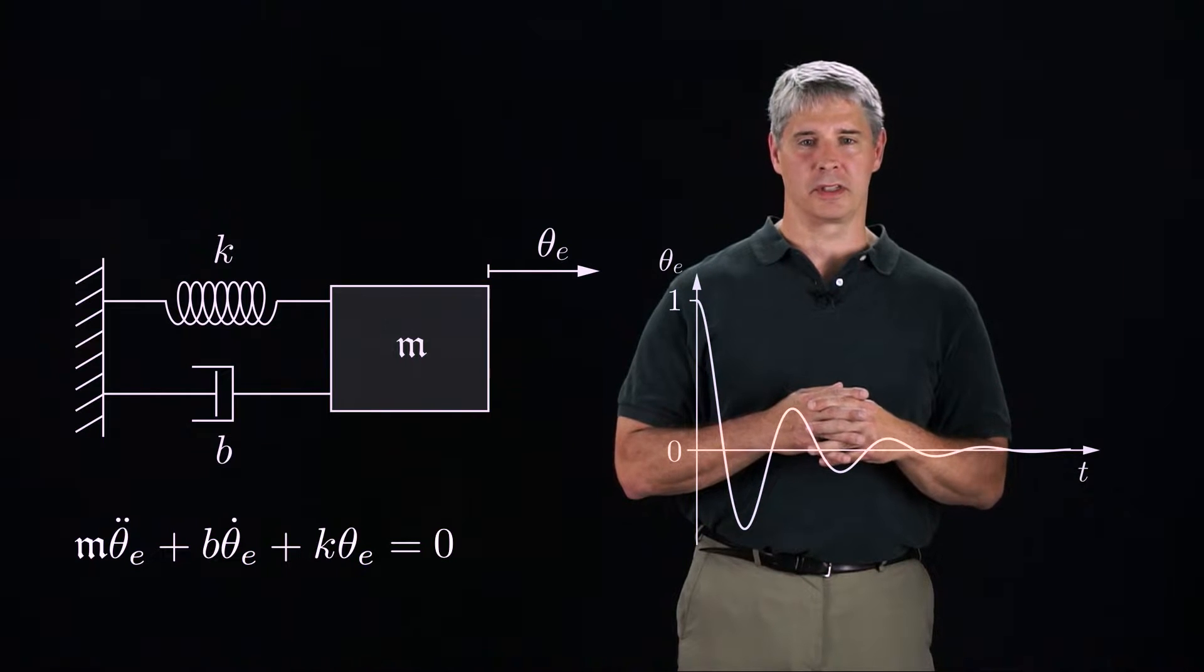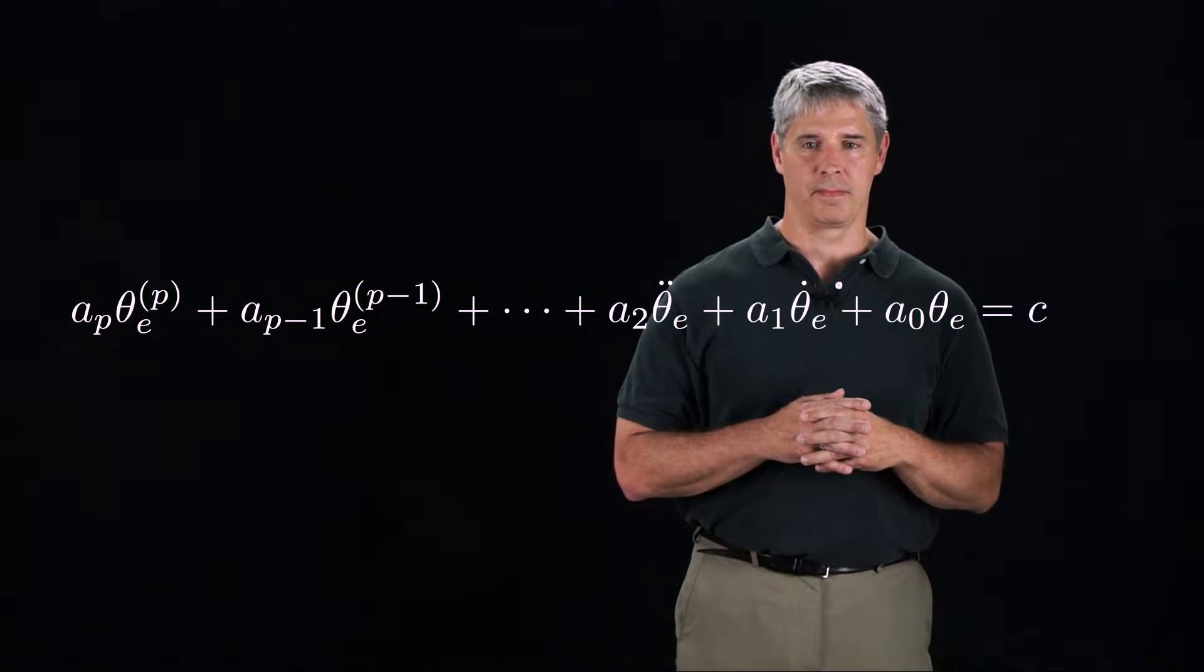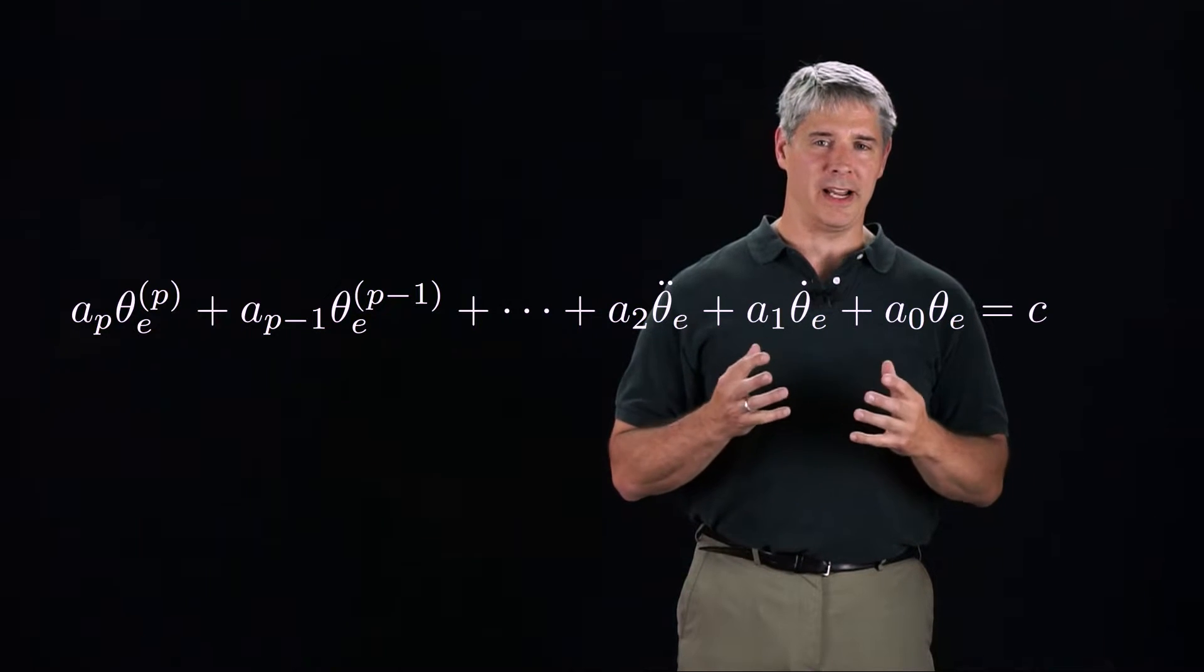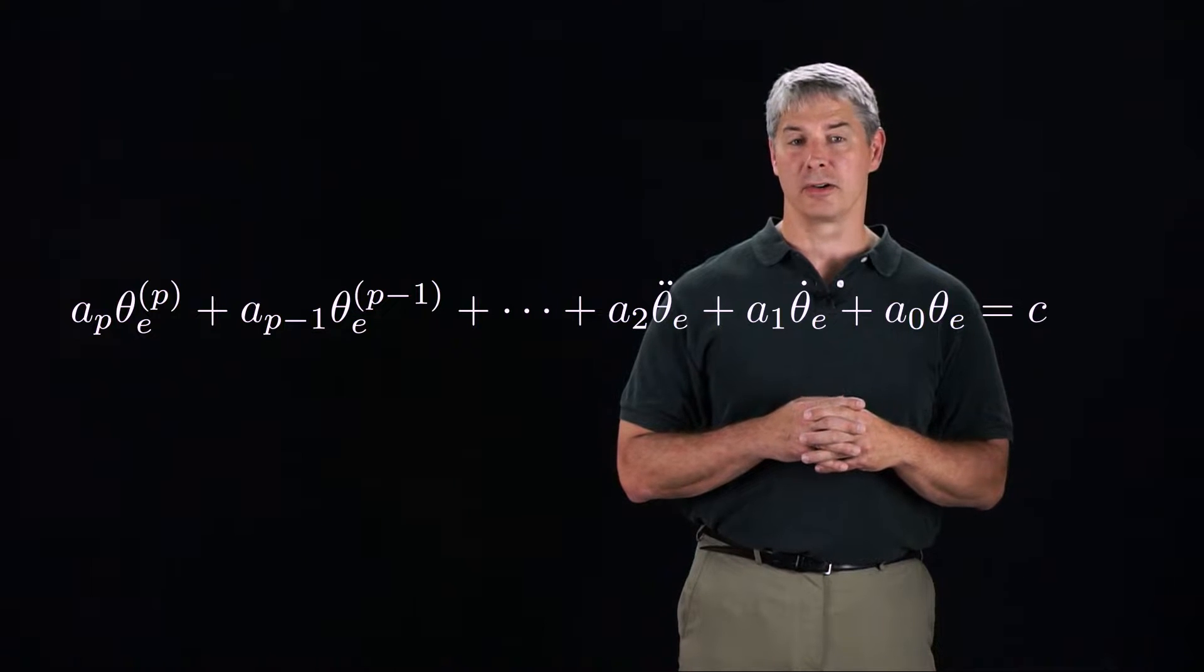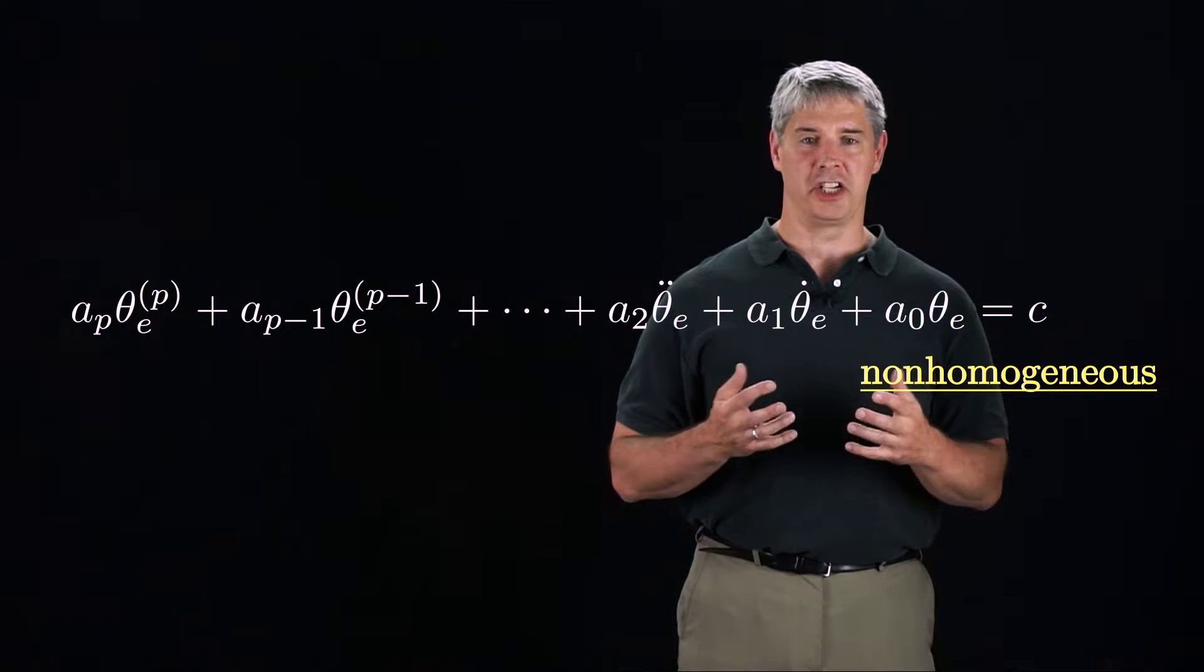More generally, in this chapter we will consider error dynamics that look like this p-th order differential equation, depending on p derivatives of theta E. The right-hand side of this equation is a non-zero constant C, and such a differential equation is called non-homogeneous.